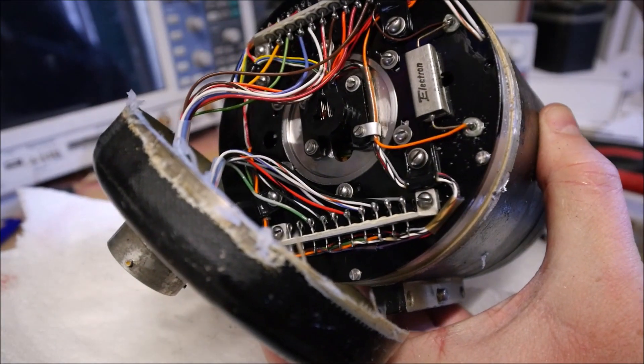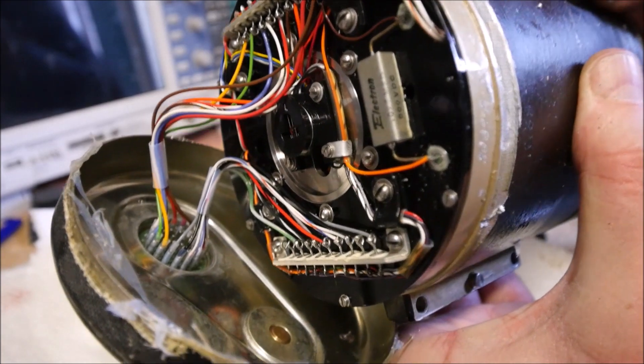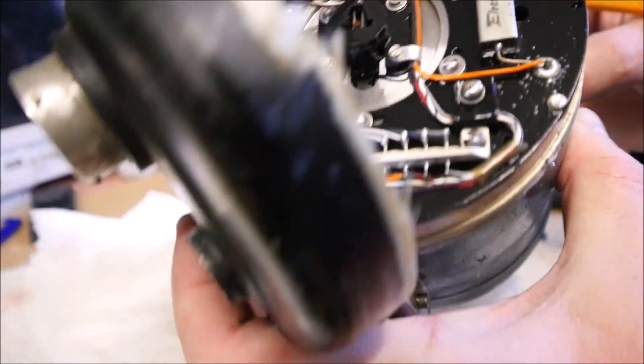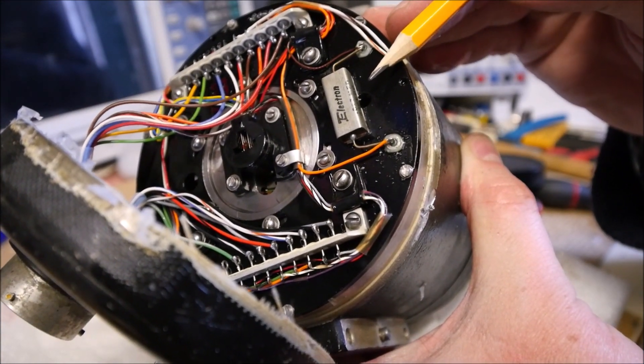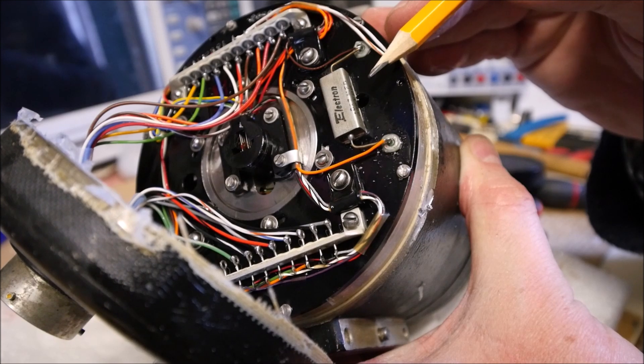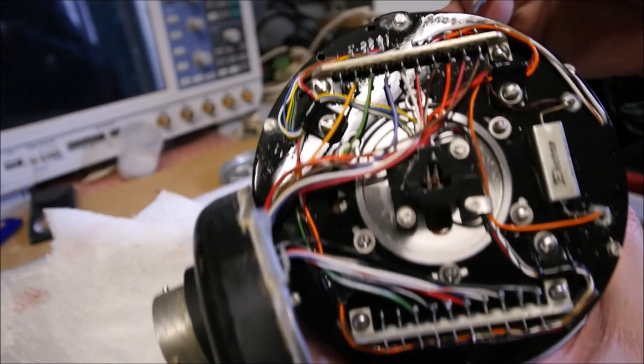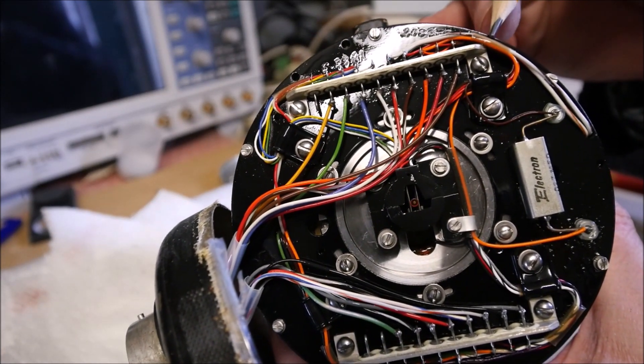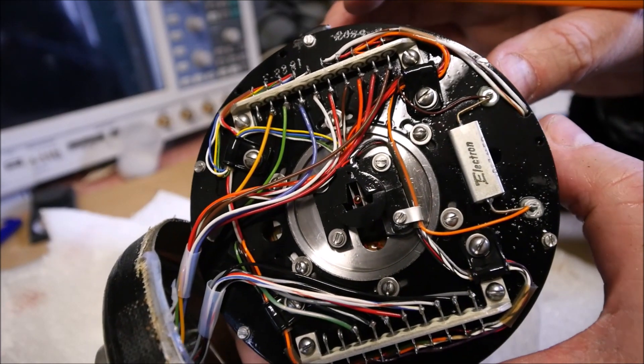We can see a capacitor here. This capacitor is probably used for the AC motor, for the rotor of the gyro. We can see that there are several screws here. So I will try to remove this screw, so I hope it will be possible to remove the complete assembly.